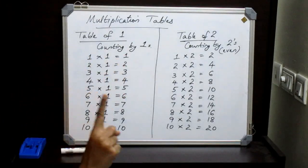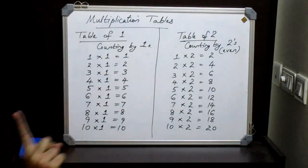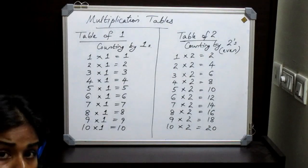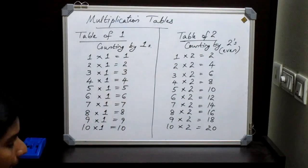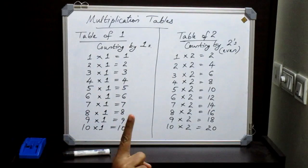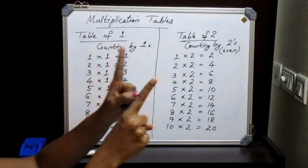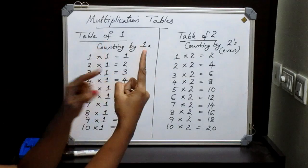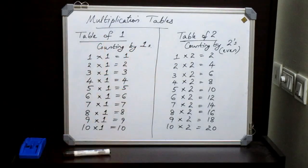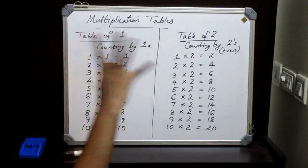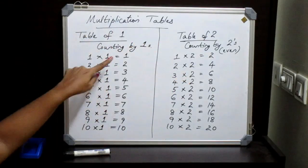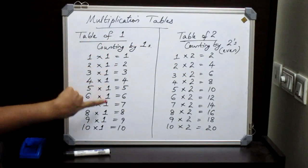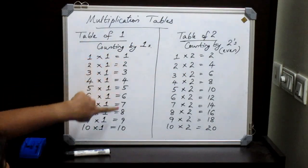So what is 1 into 1? It is 1, because I am taking 1 only once. 2 into 1 equals 2, meaning I am taking 1 two times: 1, 2 times, so that becomes 2. If I take 1 three times that becomes 3, and 1 four times it becomes 4. So the answers for the multiplication table of 1 from 1 to 10 are 1 to 10 itself.